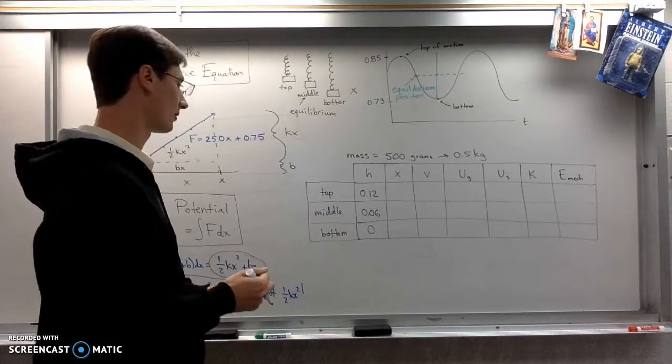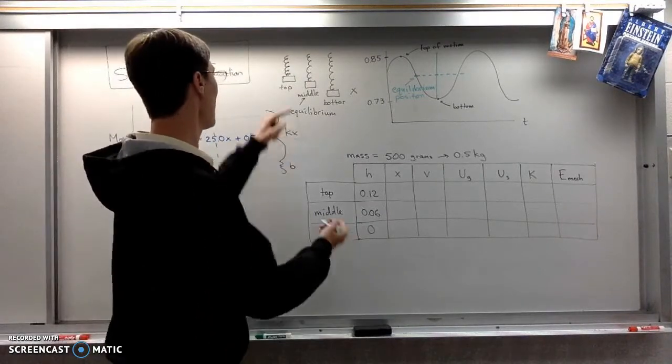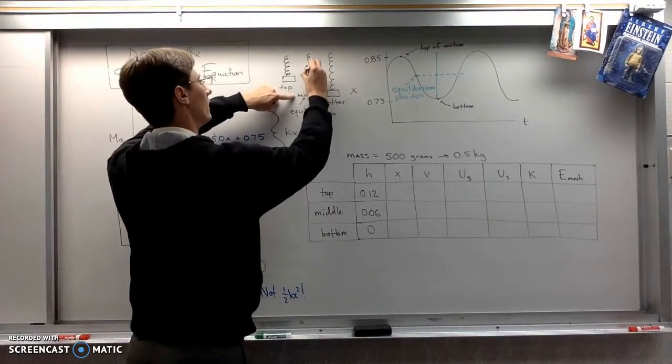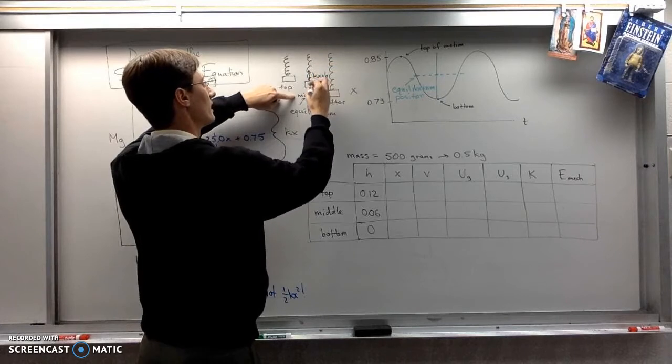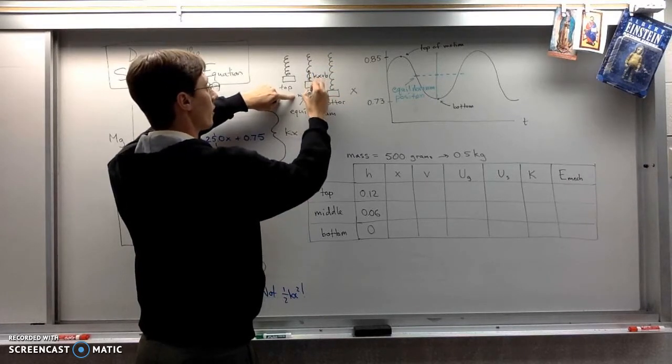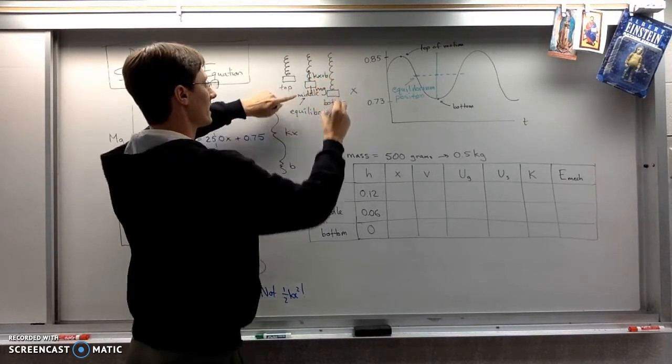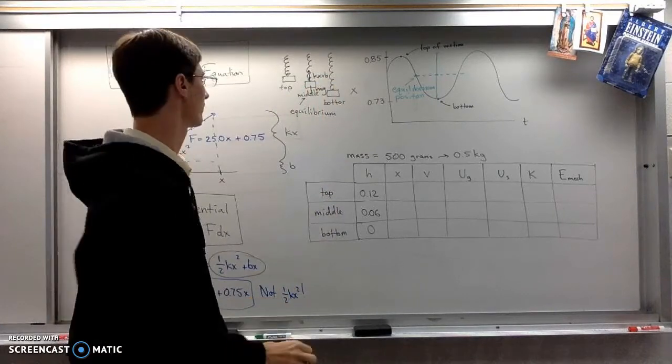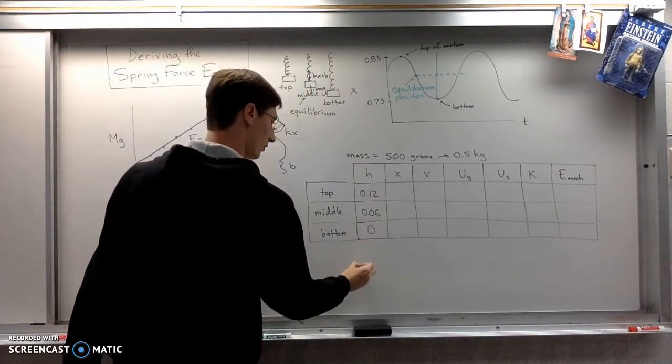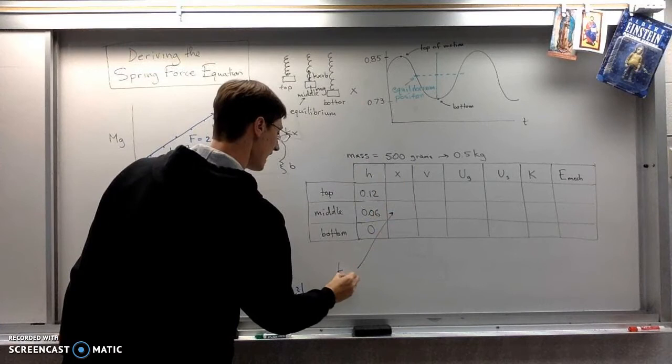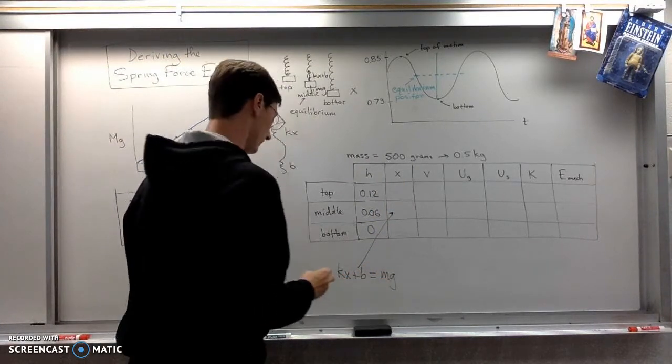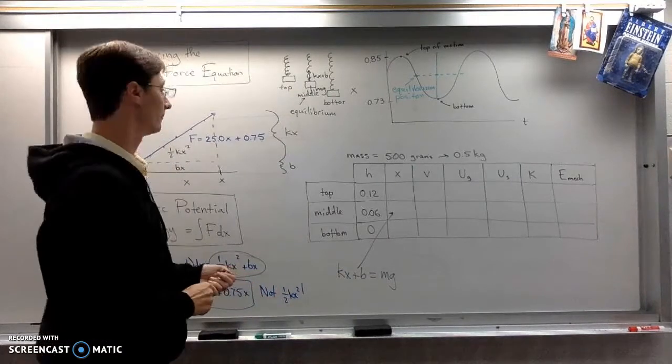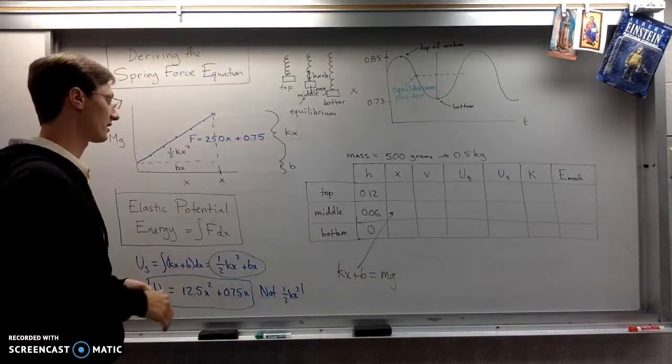The way you will find your equilibrium extension is by saying, well, at equilibrium, the spring force is equal to the weight of the object. Maybe I should have put those in different colors, but here it goes. Slightly more blown up. Kx plus B equals Mg. So using my bogus made-up values here. Okay,